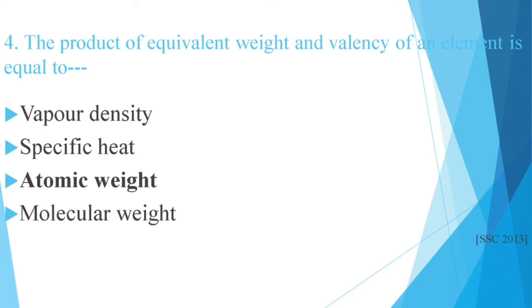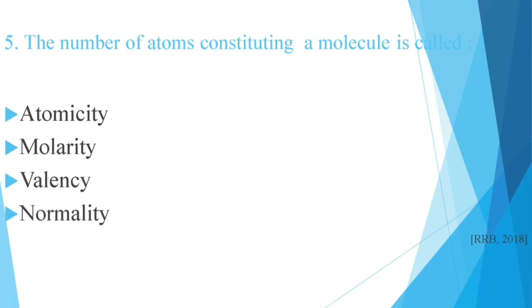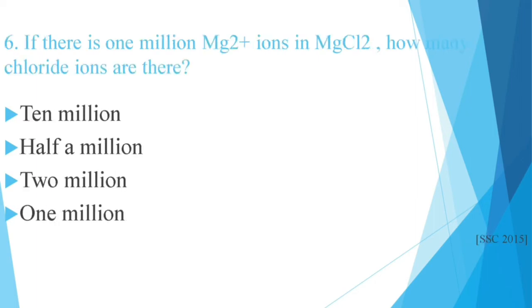Question number 5: The number of atoms constituting a molecule is called atomicity, molarity, valency, or normality. This question is in RRB 2018. The correct answer is atomicity.